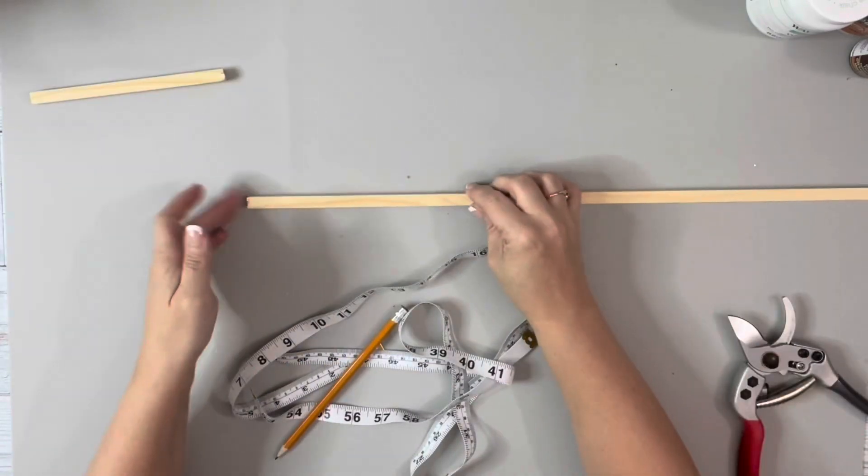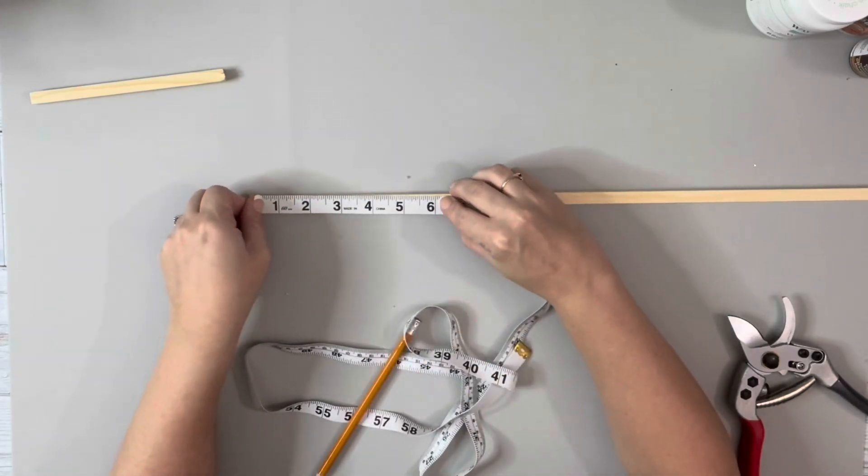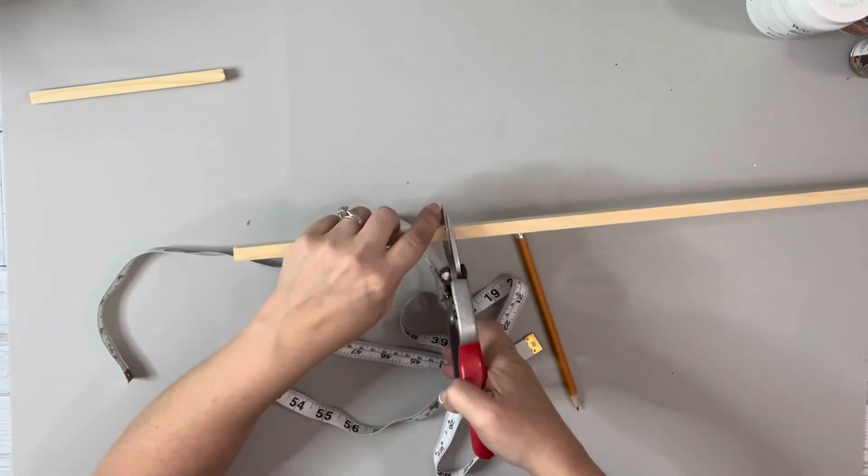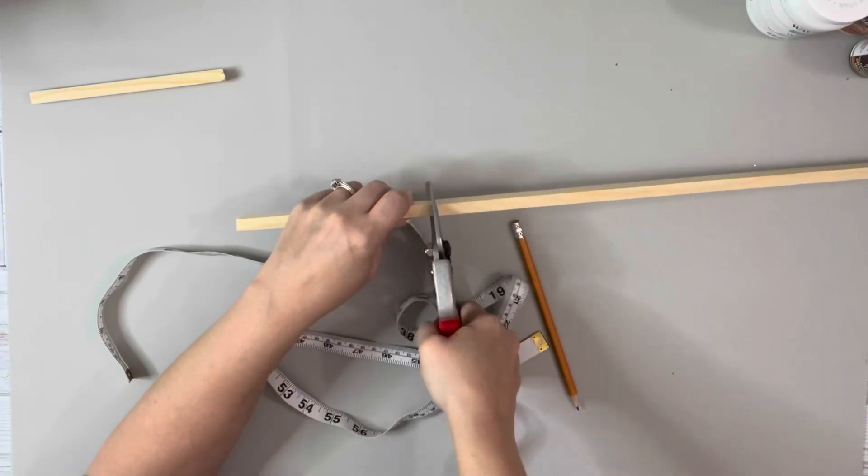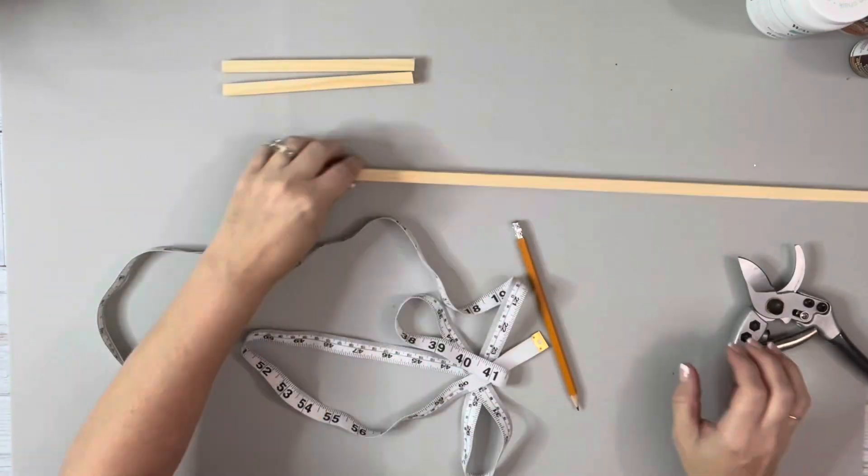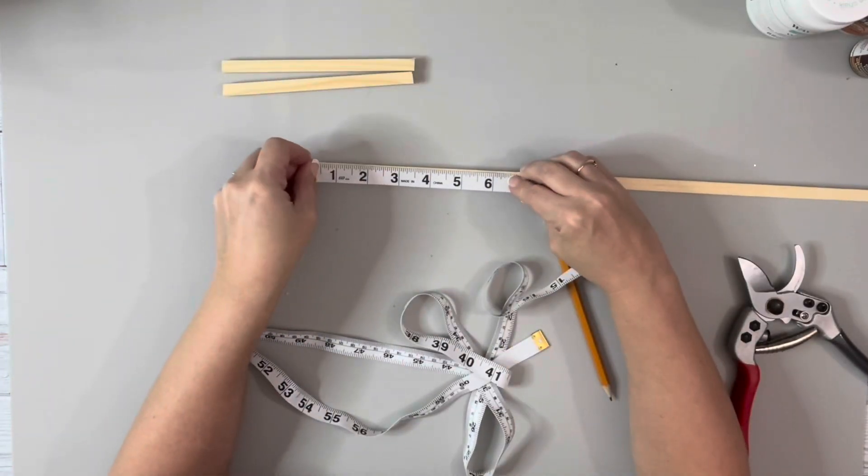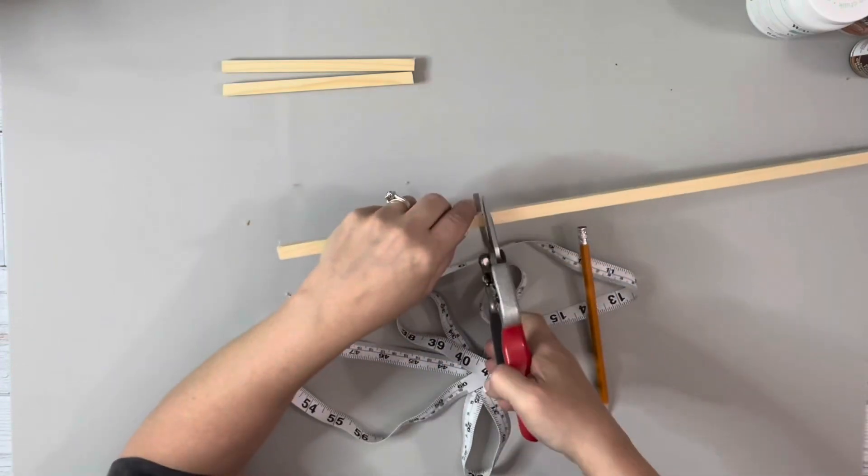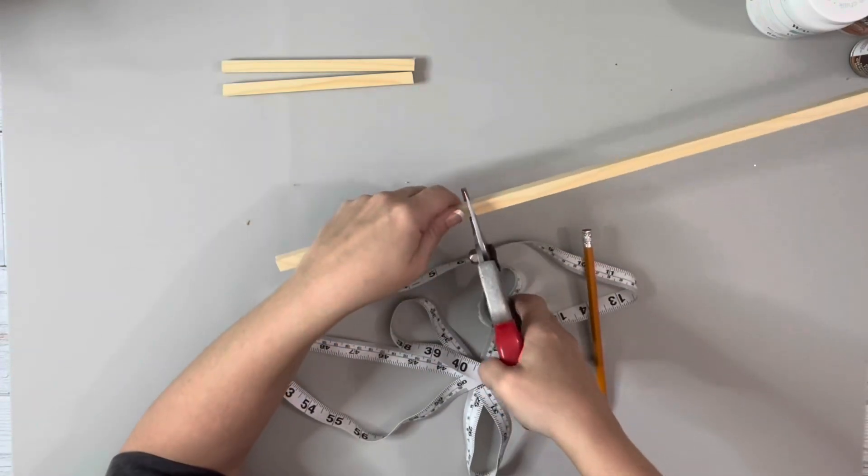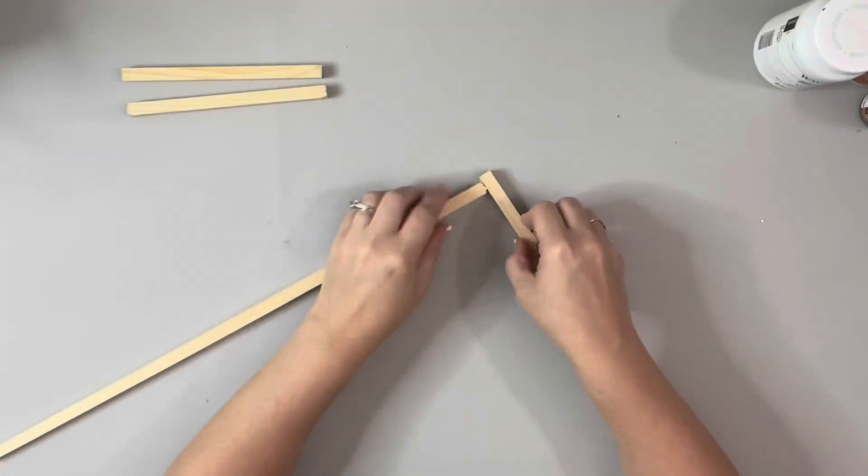I started by measuring and cutting the dowel from Hobby Lobby. I cut three pieces that were six inches and then three pieces that were five and a half inches, and I used my pruning shears to cut them.